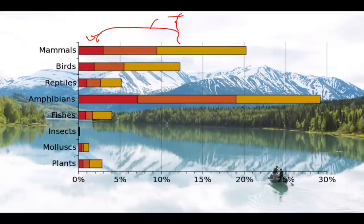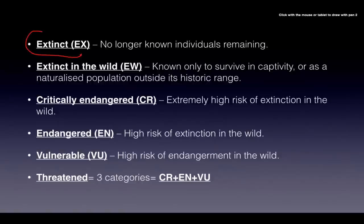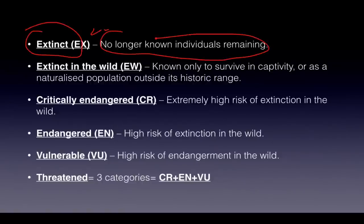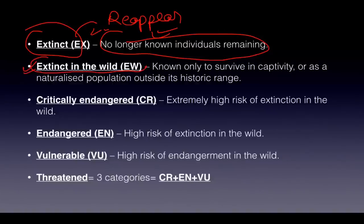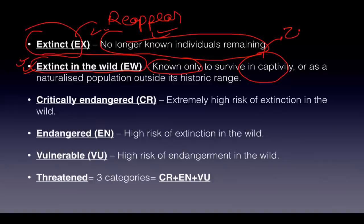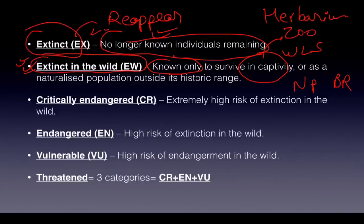The Red List categories are: Extinct — no longer any known individual remaining, though extinct individuals do occasionally reappear after 50 or 60 years. Extinct in the Wild — no known individuals in the wild; the species survives only in captivity, such as in a zoo, wildlife sanctuary, national park, biosphere reserve, or herbarium. In this case the naturalized population is not found outside its historical range.